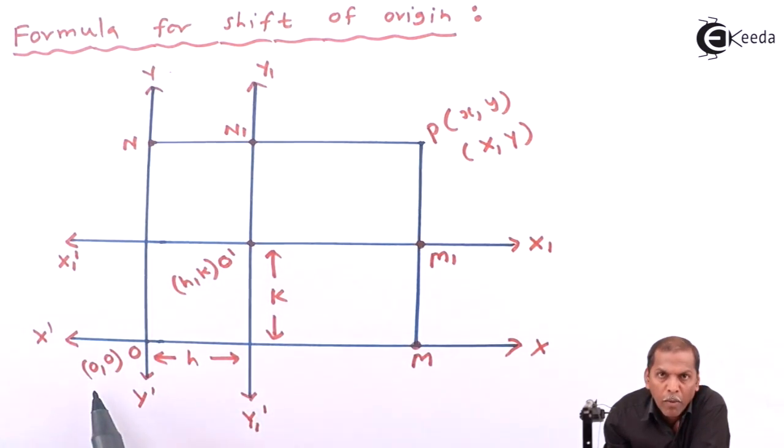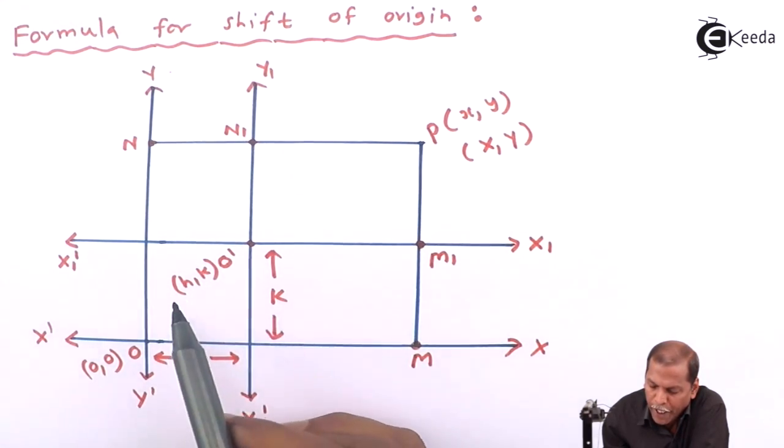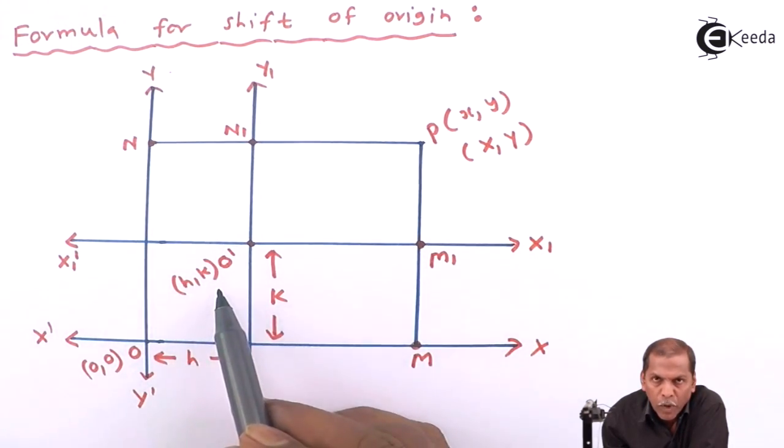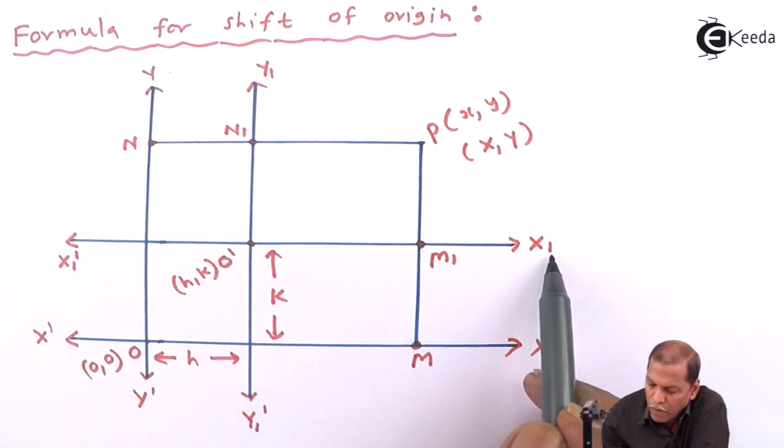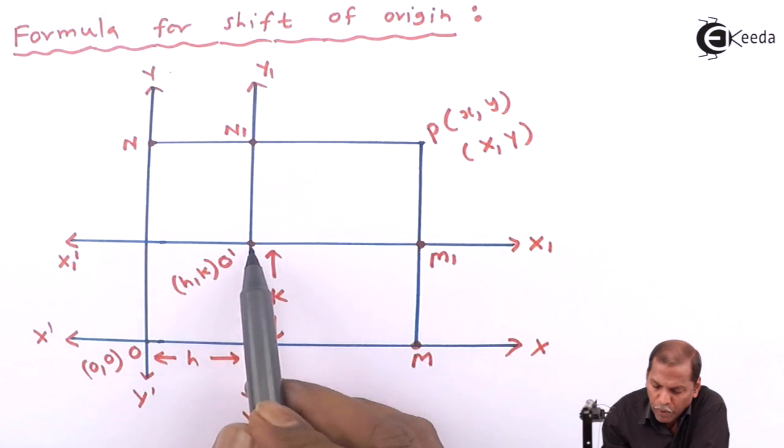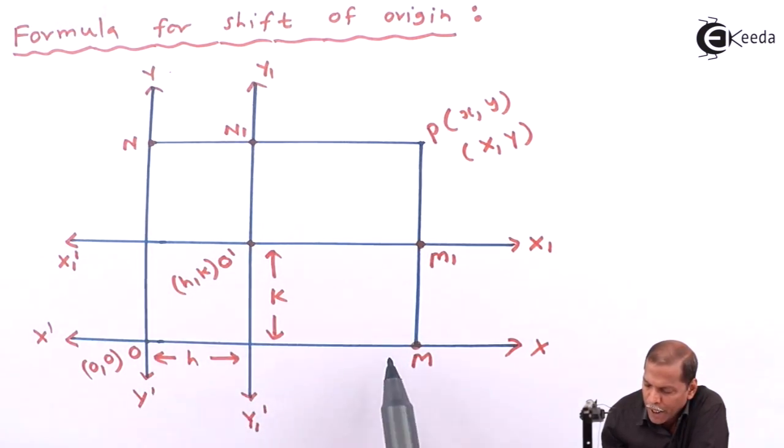Now suppose this origin O(0,0) is shifted to the point O' having coordinates (h,k) in such a way that the x₁O'x₁' is parallel to the x-axis and y₁O'y₁' is parallel to the y-axis.